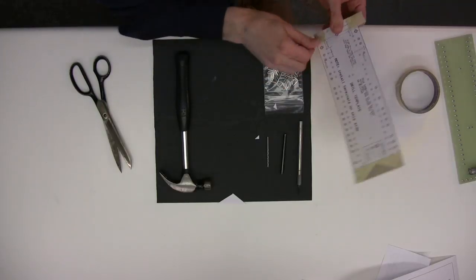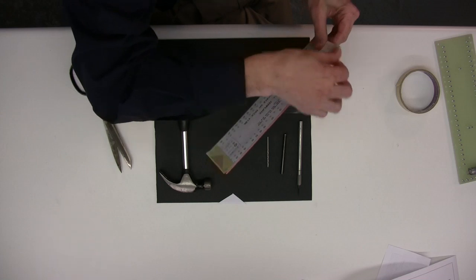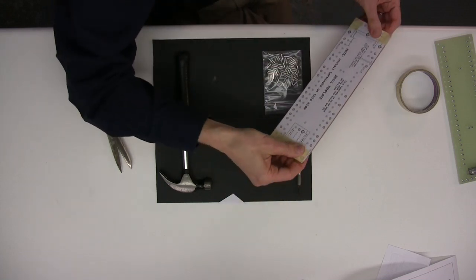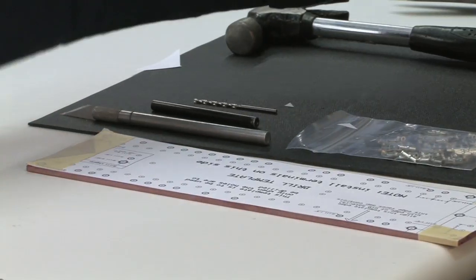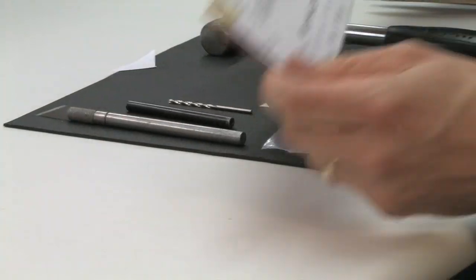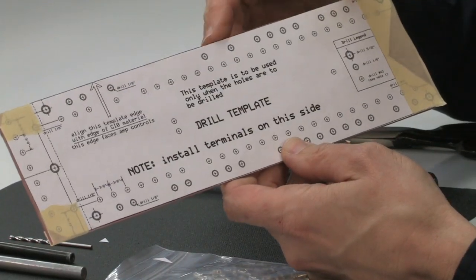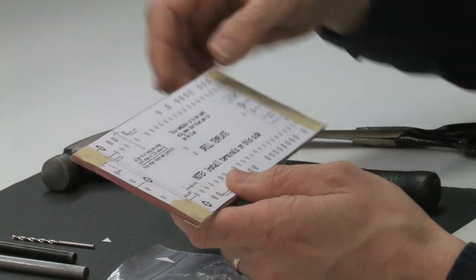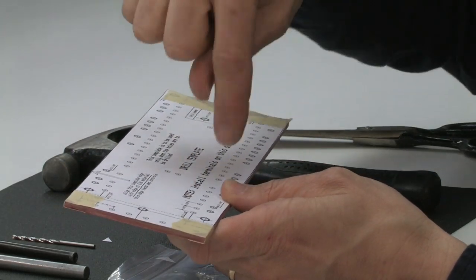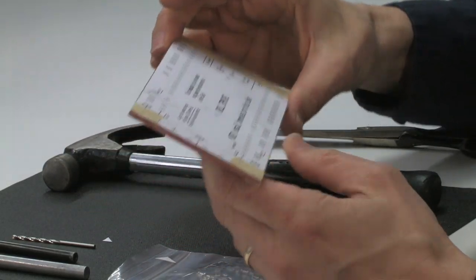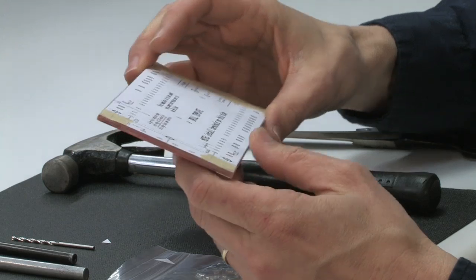With any turret mounting or any turret construction, really what you're doing is you've got to build your layout. You need to transfer your layout to your epoxy board, G10 board. That is by putting holes or some kind of marks through the template onto the board. Then you're going to drill the holes and then you're going to mount the turrets. It's really only a four-step process.